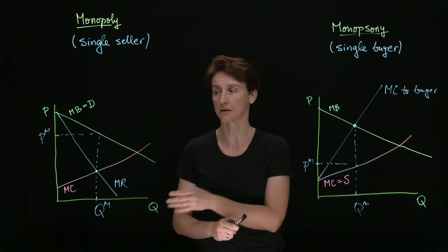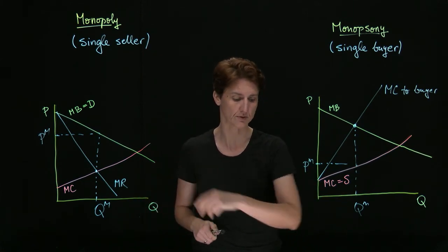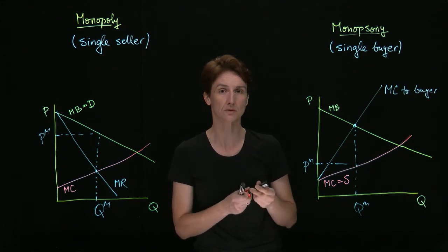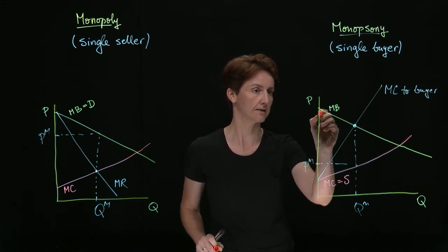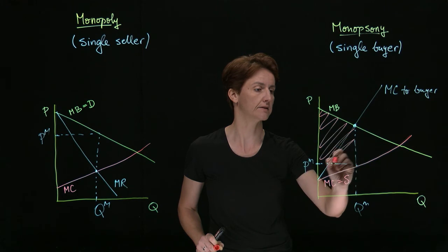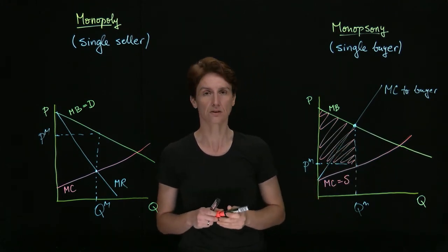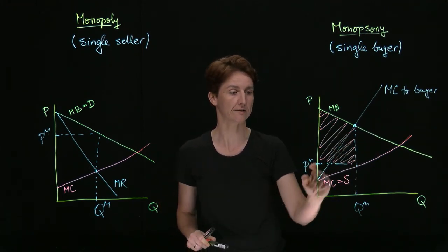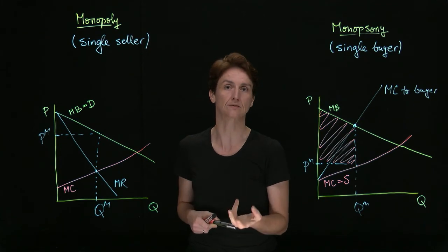Again, there's a direct parallel to the way that a monopolist operates. And now the consumer surplus is maximized. That is again, that's this area. In both cases, we have deadweight loss and we have reduced surplus for the other side of the market.